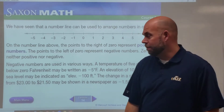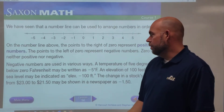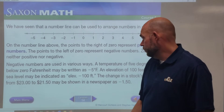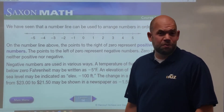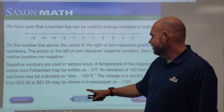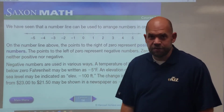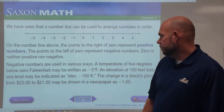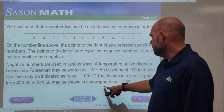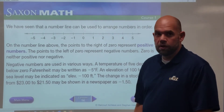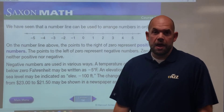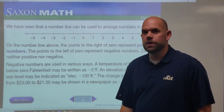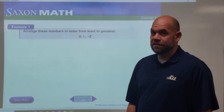We use negative numbers in a lot of different ways. A temperature below zero Fahrenheit might be written as negative five degrees Fahrenheit — that is cold. When I lived in Wisconsin we got down to like negative 20; you don't want to go outside for that. An elevation of 100 feet below sea level might be negative 100 feet. A stock price might drop from twenty-three dollars to twenty-one fifty, shown as negative one point five zero. You can also go into debt — being in the red — and represent that through negative numbers.